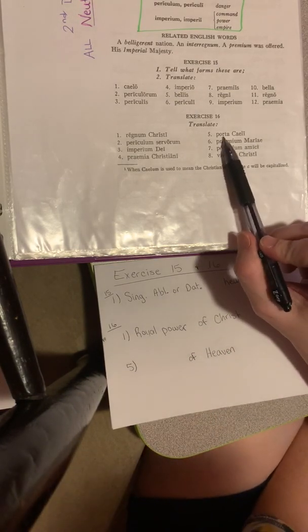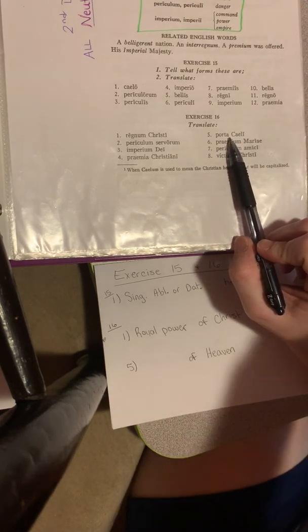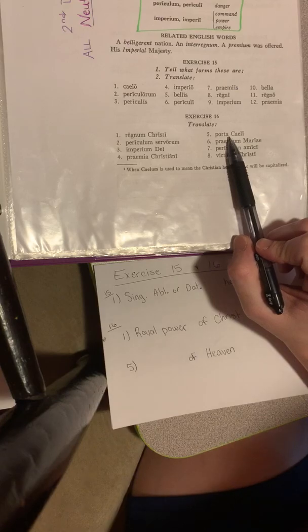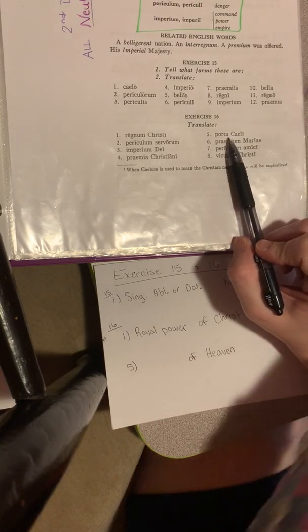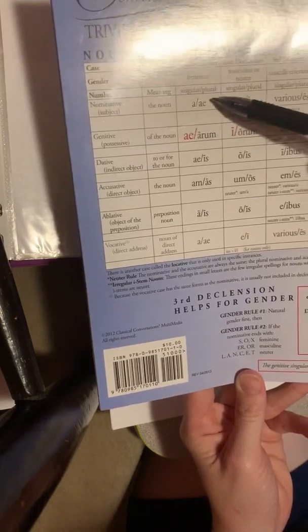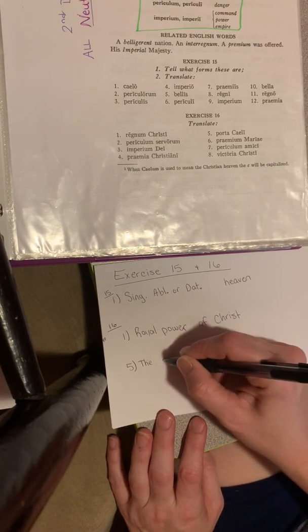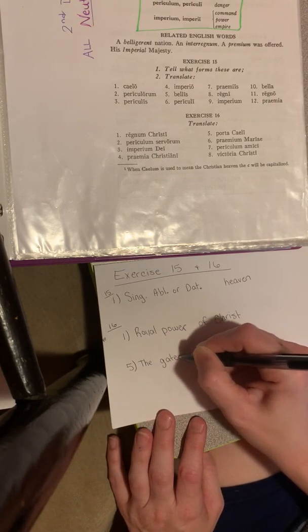Now let's go back and look at this porta. Porta means gate. And it is a first declension. And it ends in A. Well, our only option there is that it is our subject and it's singular. So the gate of heaven.